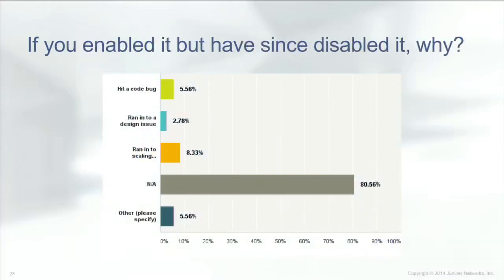The next question was: if you have enabled it but since disabled it, why? The large NA here I interpret to mean that most people who have enabled BGP flow spec and given it a try have left it on — they haven't gone back and disabled it. There were a few people who ran into a code bug, an issue with their design, or a scaling parameter that required them to remove it. But the overwhelming majority — almost 81% of people who enabled it — have stuck it out.